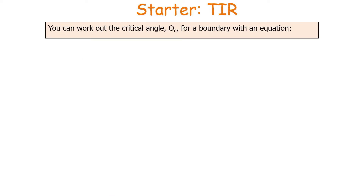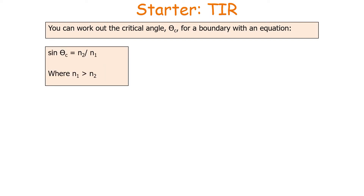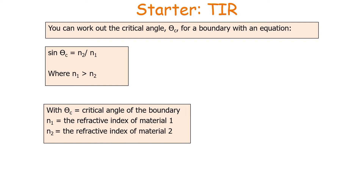We can use this to work out a value for the critical angle, theta c, for any boundary using the equation: sine theta c equals n2 over n1, where n1 must be greater than n2. Here, theta c is the critical angle of the boundary, n1 is the refractive index of material 1, and n2 is the refractive index of material 2.